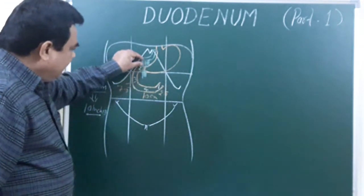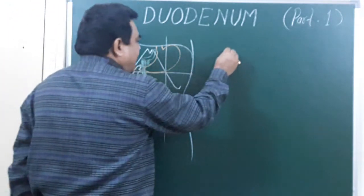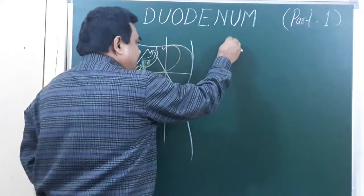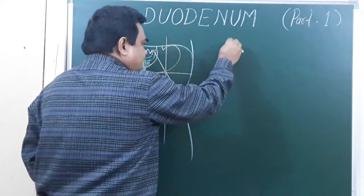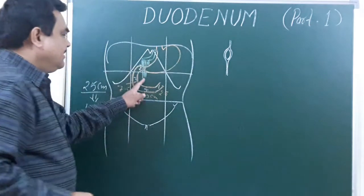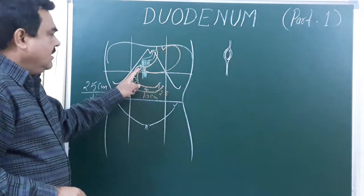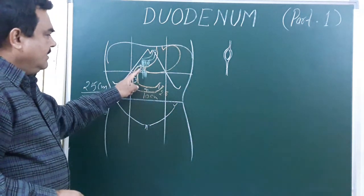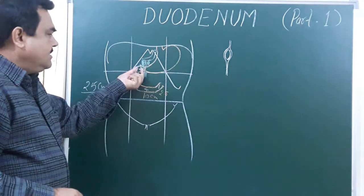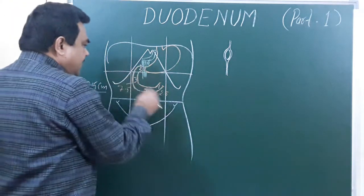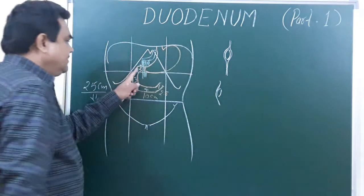The proximal half is covered by the lesser omentum above and the greater omentum below. The distal or lateral half — that is, the lateral 2.5 centimeters — is retroperitoneal and is only covered by peritoneum on its anterior side.